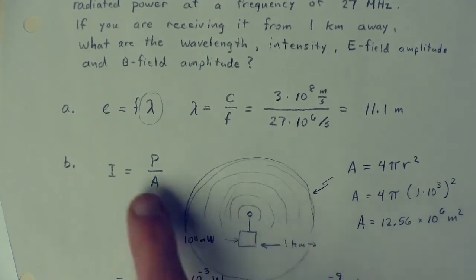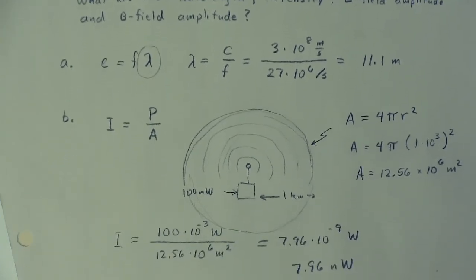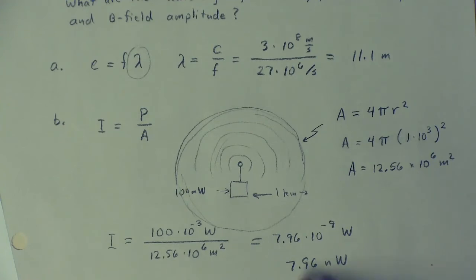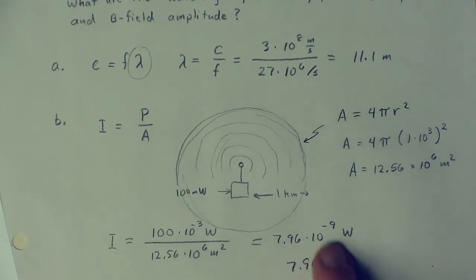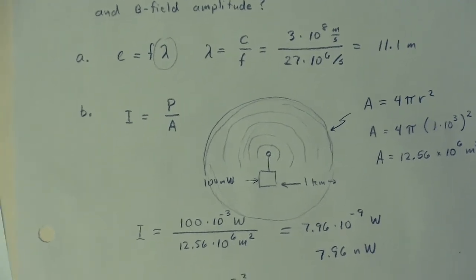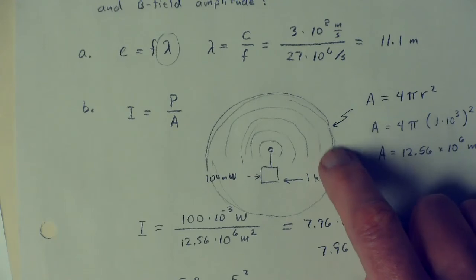Now you can very easily calculate the intensity by just putting the numbers into the formula, and out comes the answer. And it's 7.96 × 10⁻⁹ watts, or 7.96 nanowatts. Now we have the intensity, the intensity of this radio wave at this point.